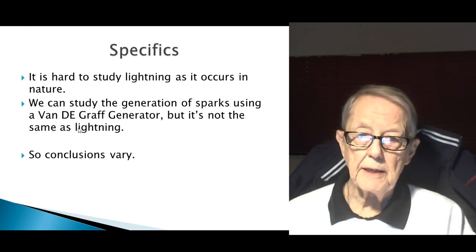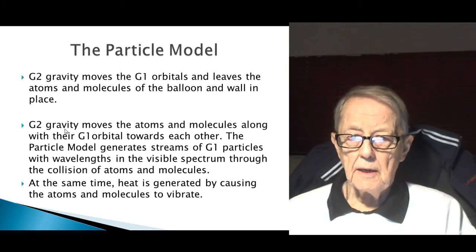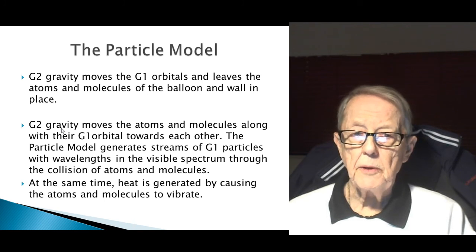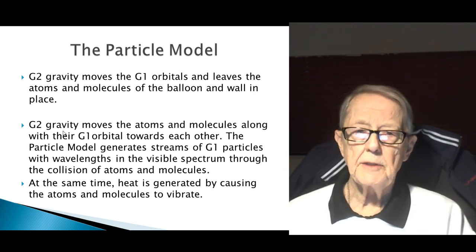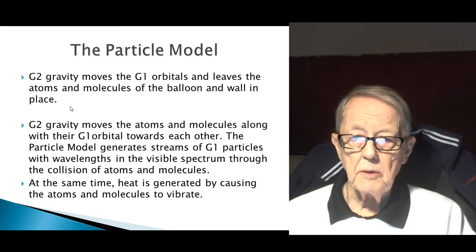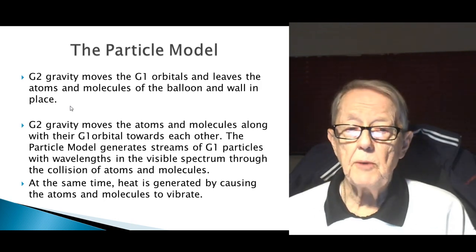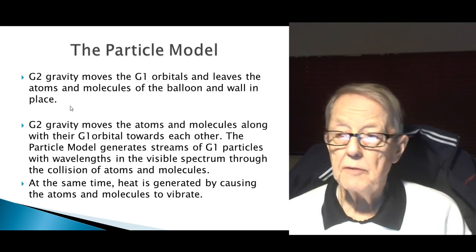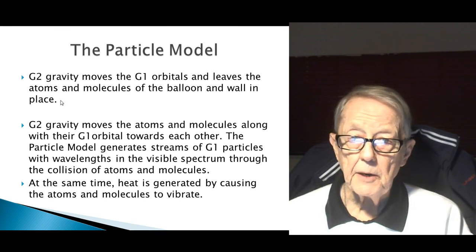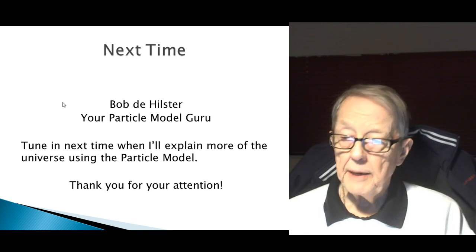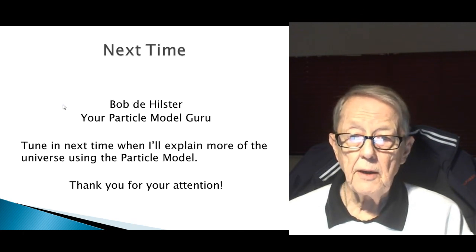In summary, the particle model: G2 gravity moves the G1 particles in orbit and leaves the atoms and molecules of the balloon and wall in place — the particles move but the wall and balloon don't. In lightning, G2 gravity moves the atoms and molecules along with their G1 orbitals toward each other. The particle model generates streams of G1 particles with wavelengths in the visible spectrum through the collision of atoms and molecules. At the same time, heat is generated by causing the atoms and molecules to vibrate at a high rate, expand, and collapse. My name is Bob Hilster, and I am your Particle Model Guru — tune in next time when I will explain more of the universe using the particle model. Thank you for your attention.